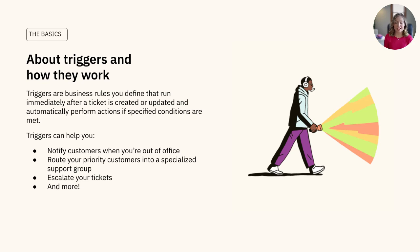For example, if Grace from Zendesk submits a ticket, then the ticket is routed to Vitor, a member of our VIP support group. There are a lot of reasons to create triggers, such as notifying customers when you're out of office or when their ticket has been received, escalating tickets, or routing your priority customers into a specialized support group.